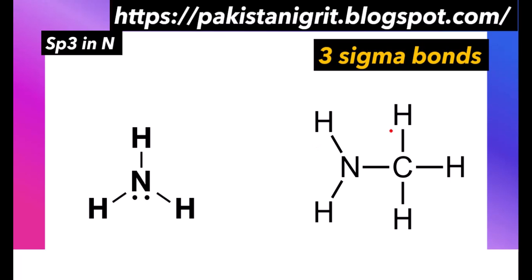Next we will discuss sp3 hybridization in nitrogen. In nitrogen, sp3 hybridization occurs with three sigma bonds. In carbon we get sp3 on four sigma bonds, but in nitrogen we have one sigma bond less than carbon because nitrogen has five electrons in its valence shell while carbon has four. We can observe this in ammonia — there are three sigma bonds, and three sigma bonds in nitrogen means sp3 hybridization.